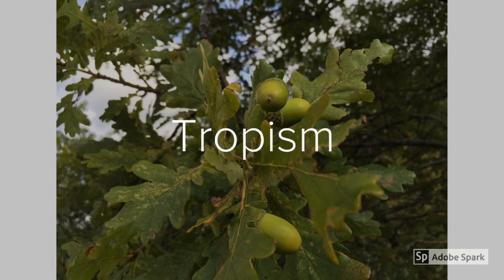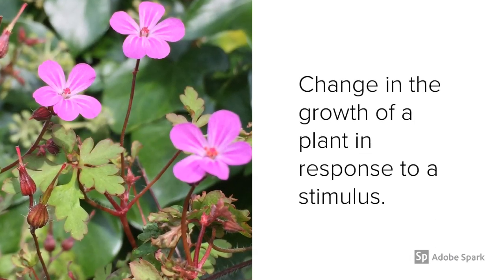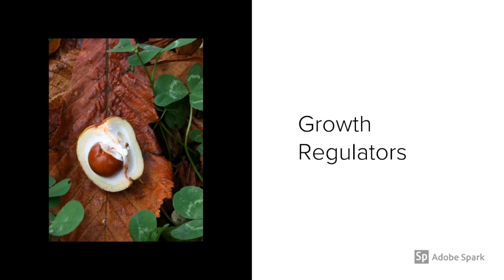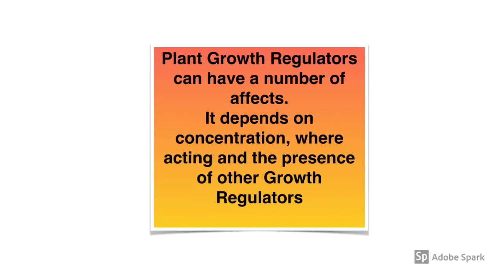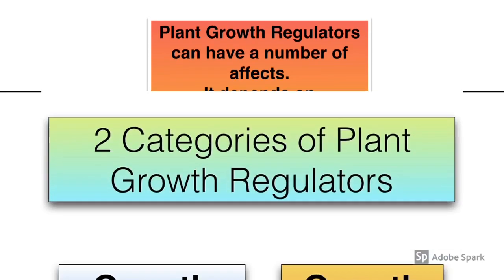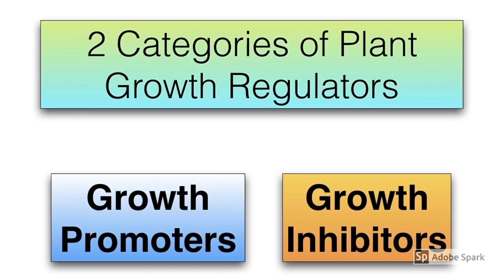Tropisms describe how plants respond to certain stimuli. You must be able to define a tropism as a change in the growth of a plant in response to a stimulus. Growth regulators are chemicals produced in plants that affect plant growth. Plant growth regulators can have a number of different effects depending on their concentration, where they're acting in the plant, and the presence of other growth regulators. These can be categorized as either growth promoters or growth inhibitors.